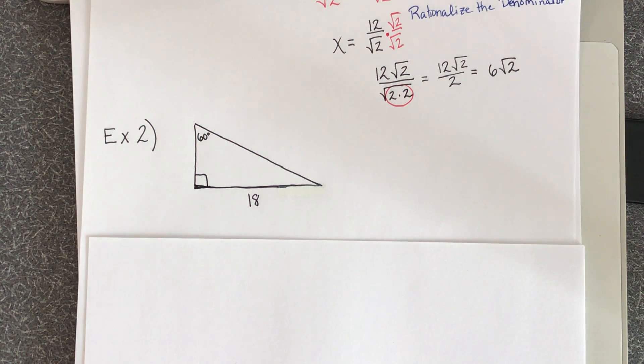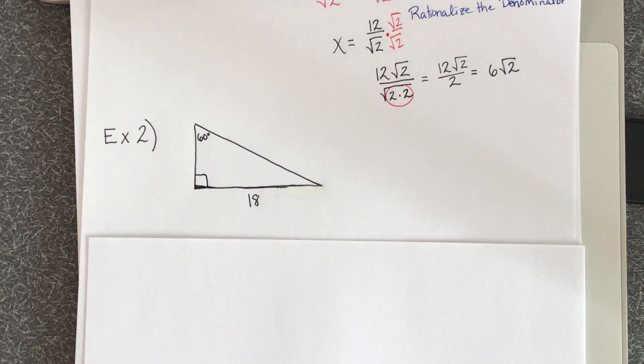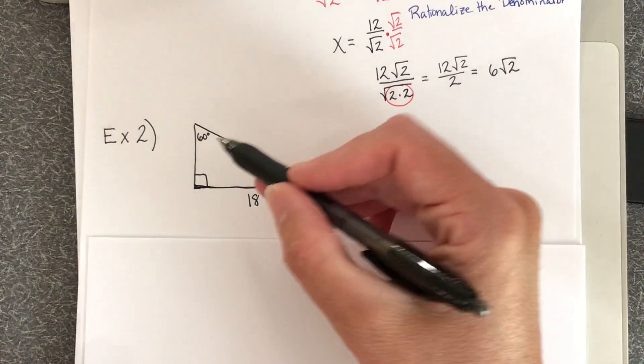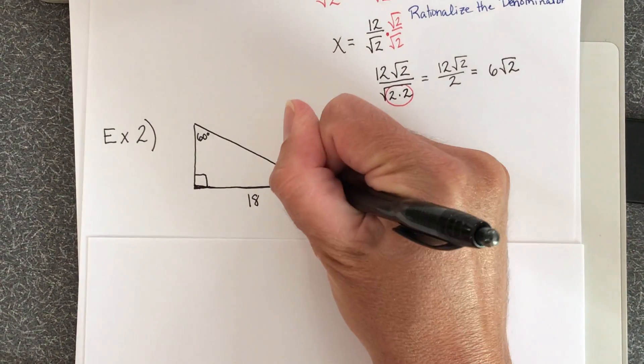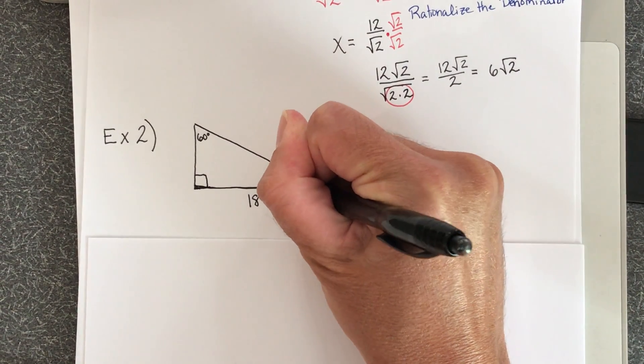Let's look at example two now. So notice in this picture we've got half of the equilateral triangle. So here's my 60 degree angle, which means this is going to be my 30 degree angle.